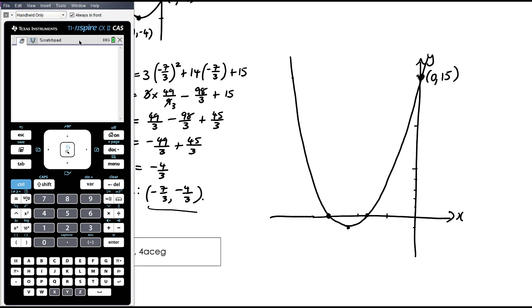So let's have 0, 15. Let's have negative 7 thirds, negative 4 thirds. That is negative 5 thirds, 0. That's negative 3, 0. And that's everything.